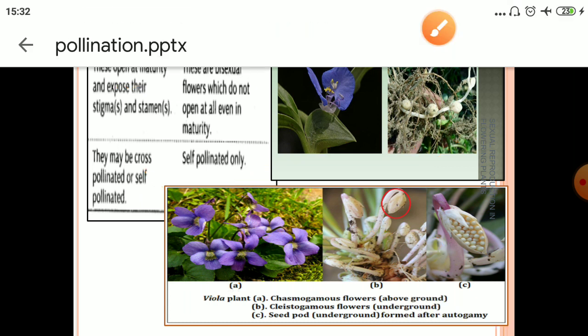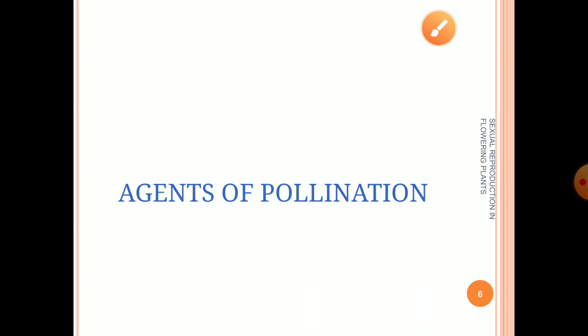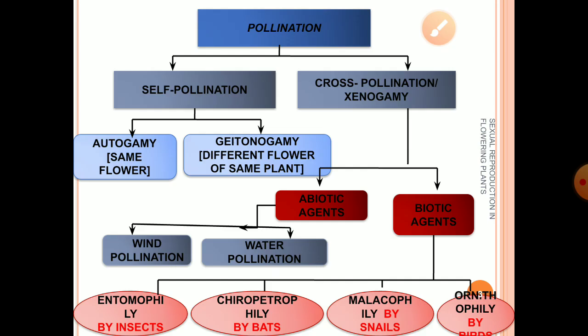Now let's discuss agents of pollination. Agents that help in pollination can be either living or non-living. They are categorized into two groups: abiotic agents (non-living) and biotic agents (living). Examples of abiotic agents are wind and water. Living biotic agents include insects, bats, snails, birds, humans, and more.